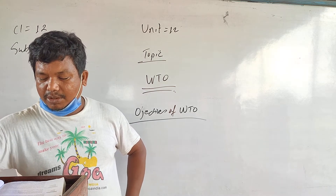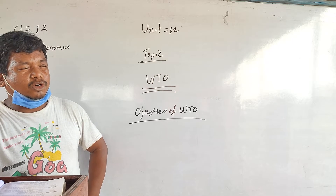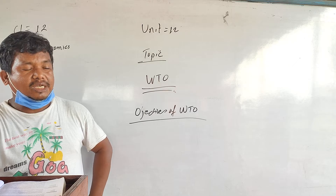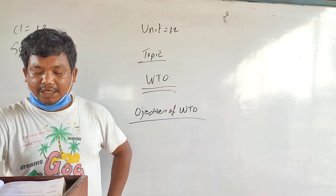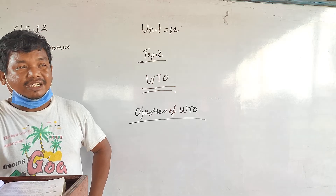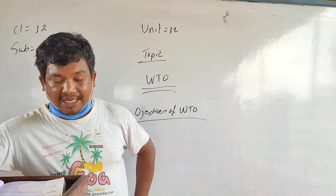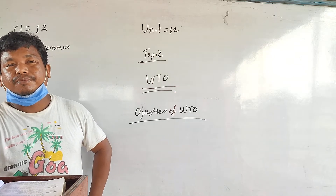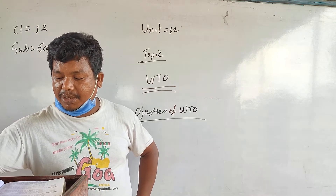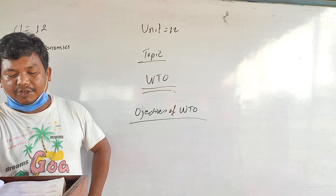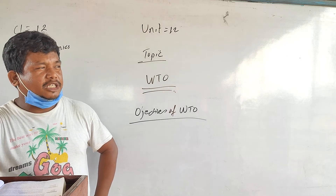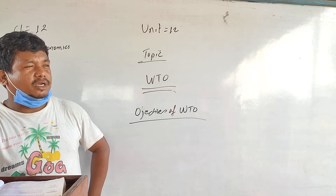Objective number one is to raise the living standard of people. WTO focuses on increasing people's incomes, on full employment opportunities, on increasing production, on expanding trade, and on optimum utilization of international natural resources. When there is optimum use of natural resources, production of the country can be increased, and when there is more production, surplus goods can be exported to other countries.